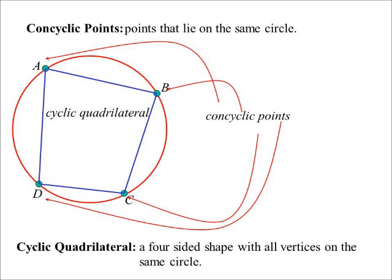A cyclic quadrilateral is a four-sided shape where all the vertices are concyclic - the vertices lie on the same circle. With those four points, I could create a cyclic quadrilateral.